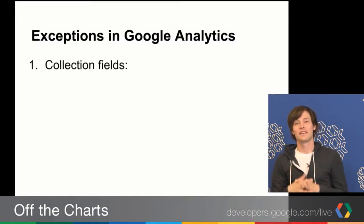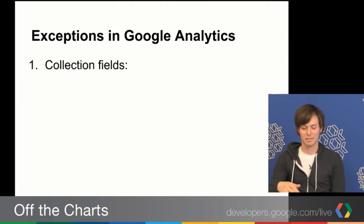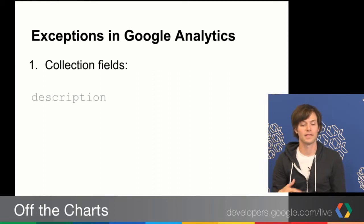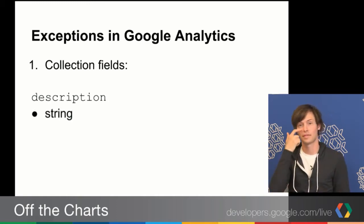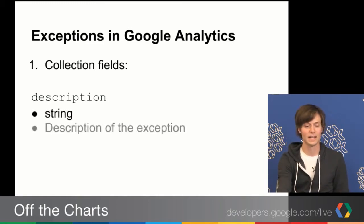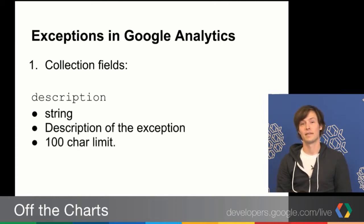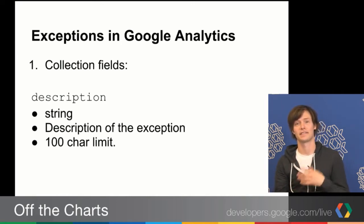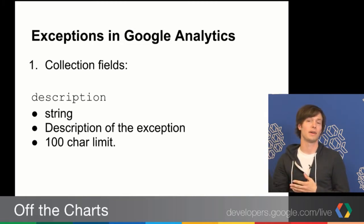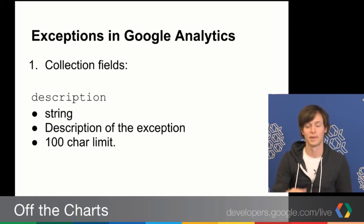One more bit of context: exceptions in Google Analytics are comprised of two collection fields. The first field is a description field — it's a string describing the exception with a 100-character limit. So you can't take an entire stack trace, dump it in, and send it to GA. It's really meant to be a short description of the exception that occurred.